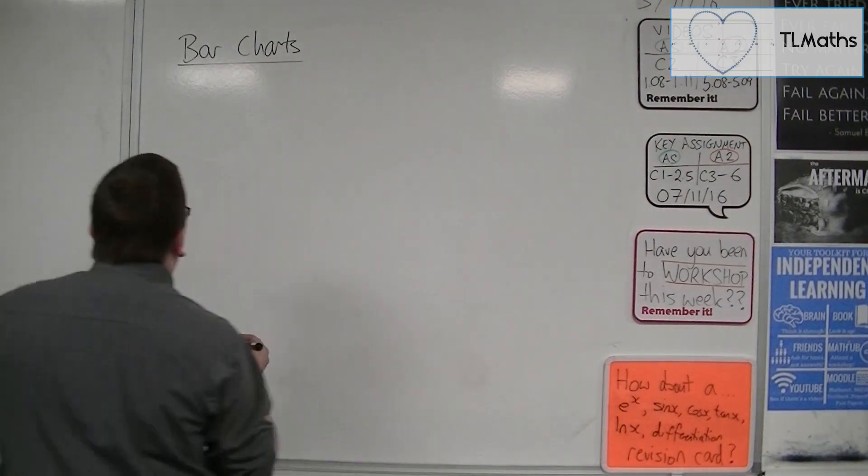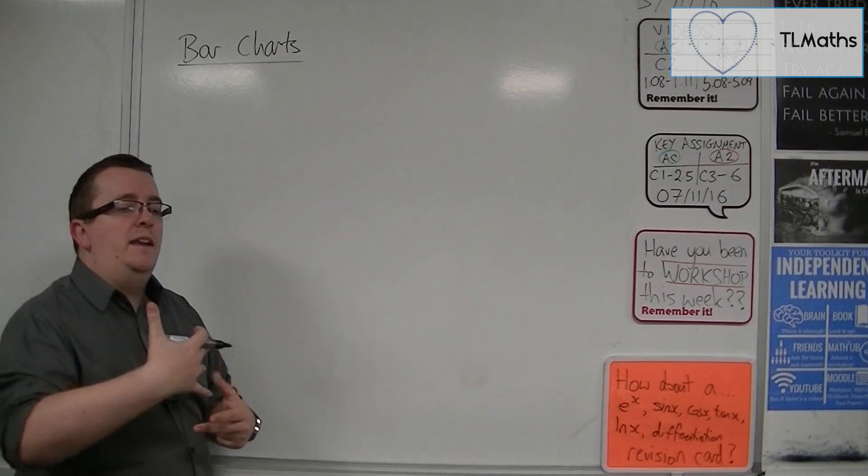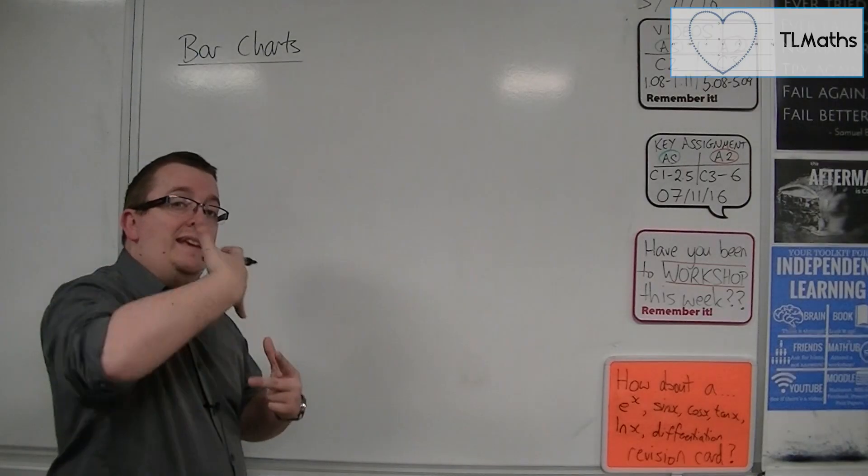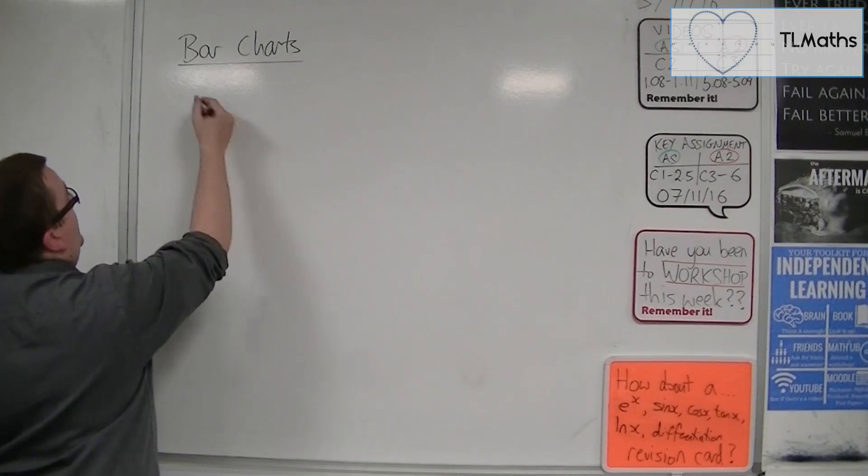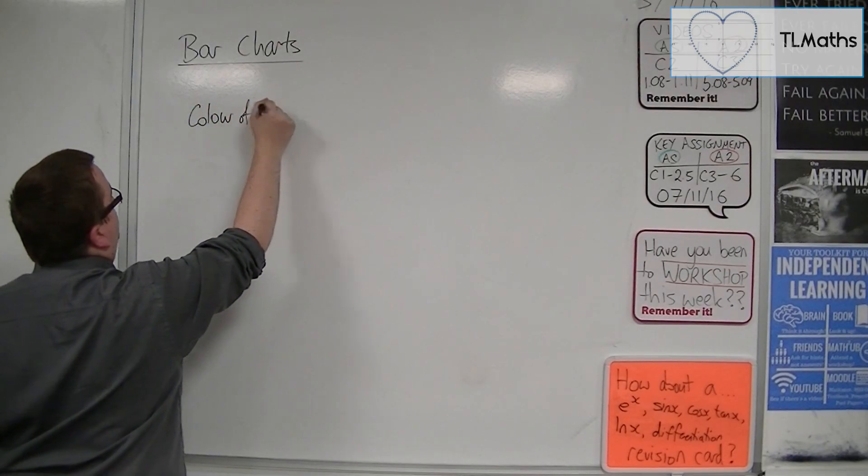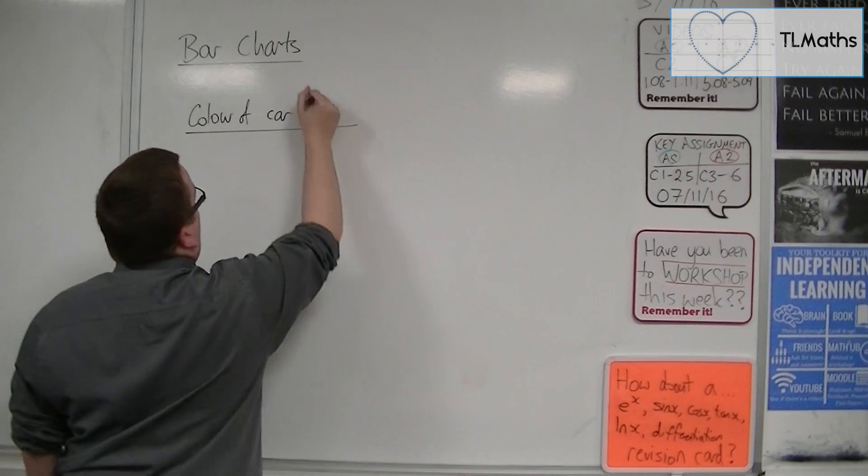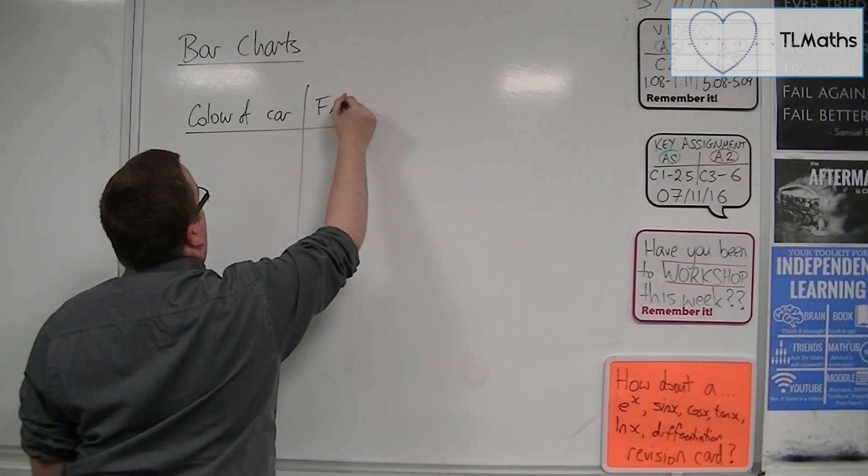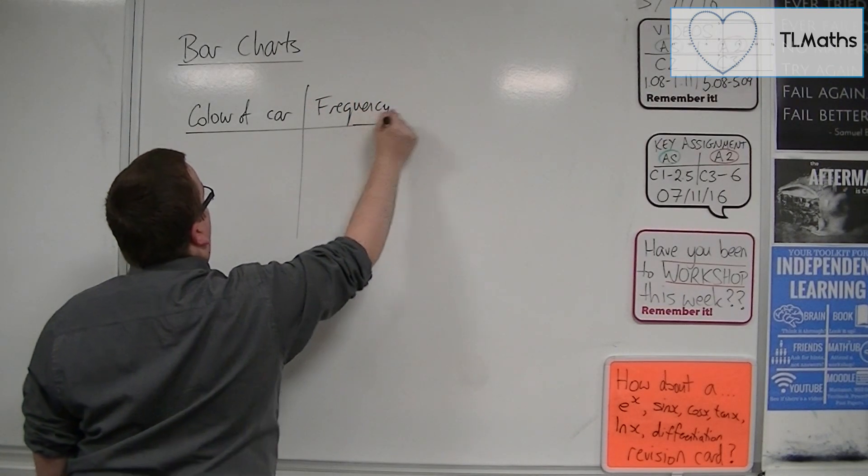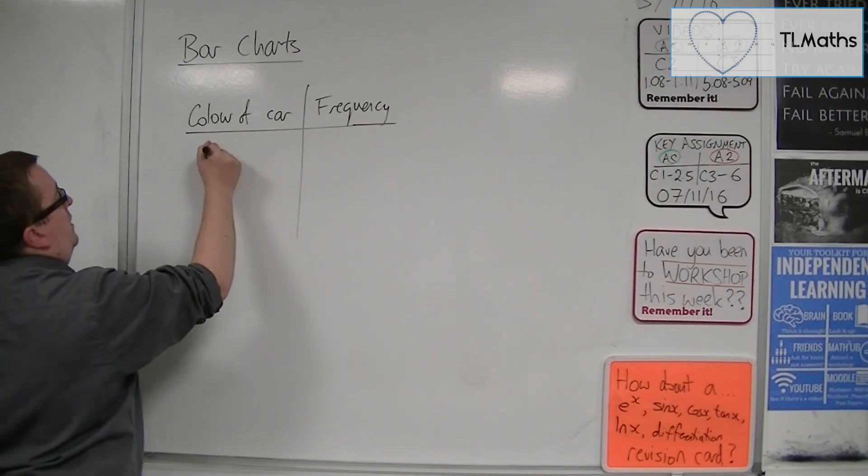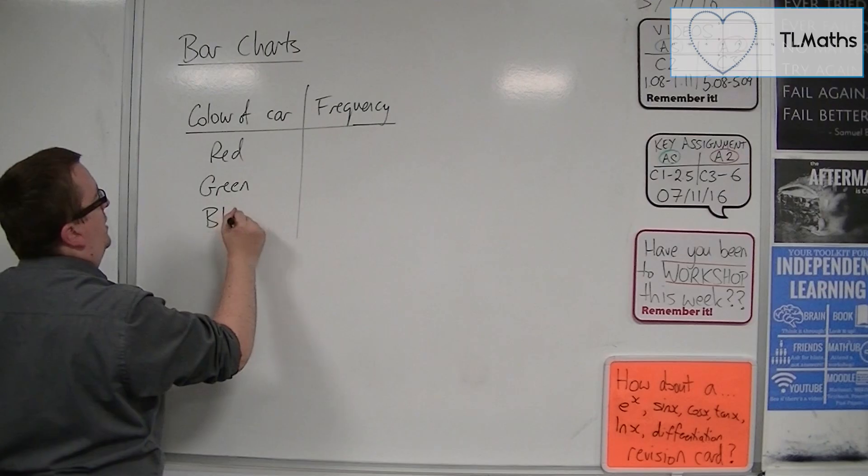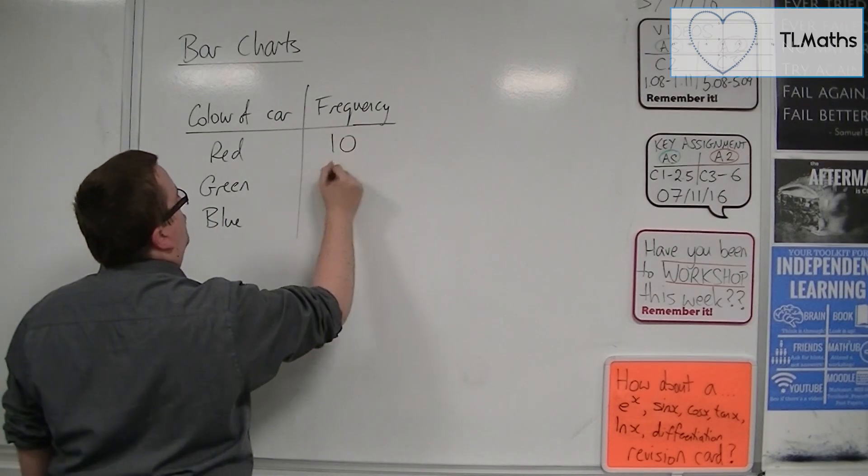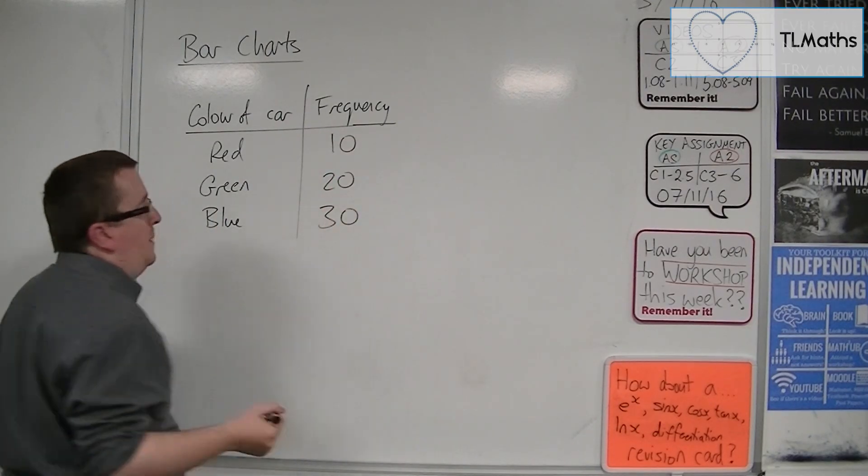So discrete data is the type of data that can be written in categories. For example, you might have the colour of a car, and then you would have a frequency column. So the colour of the car might be red, green, blue, for example, and then you would have a frequency attributed to it.